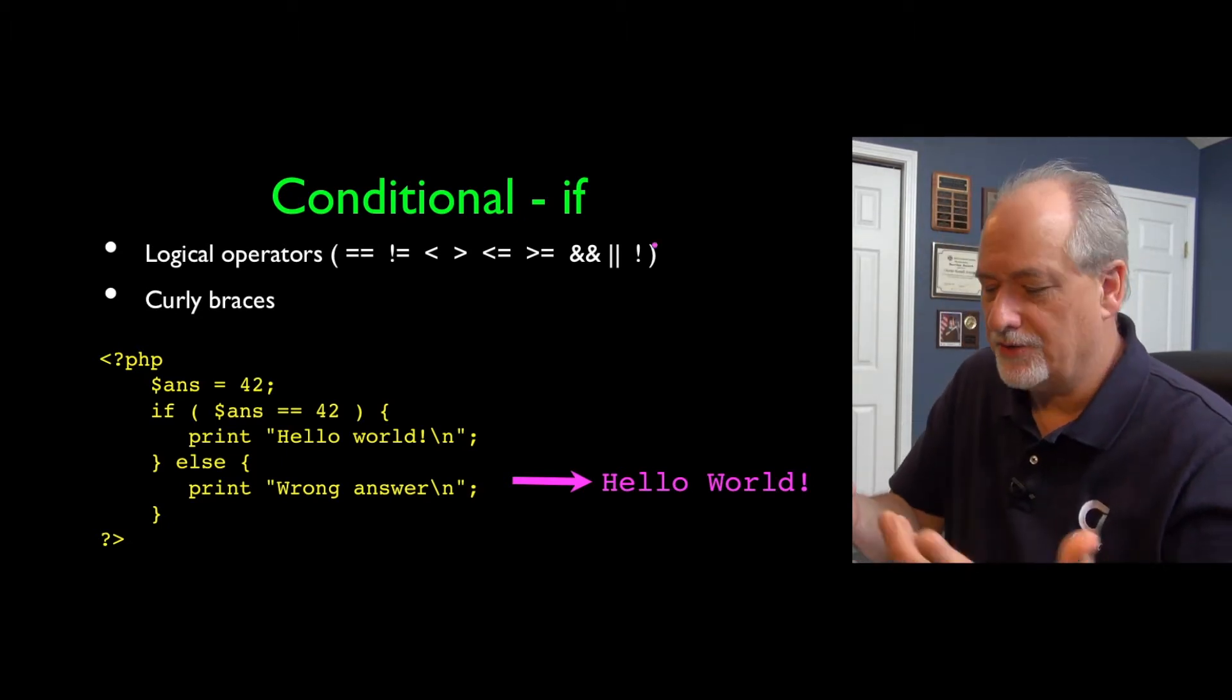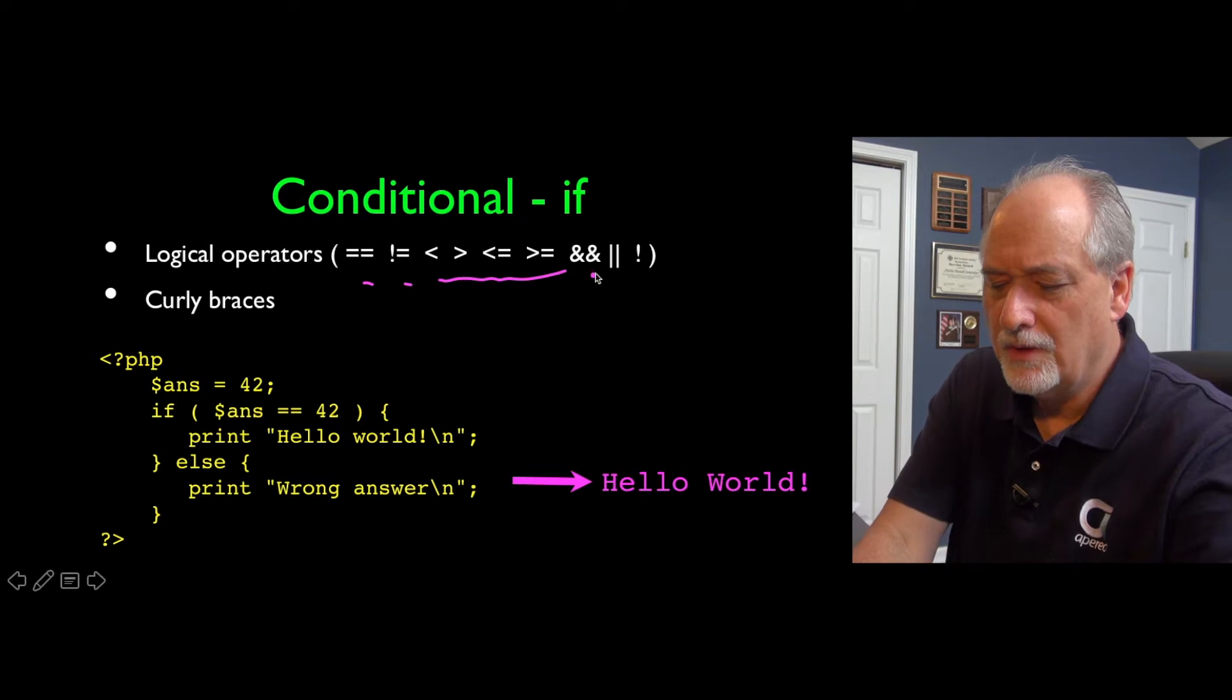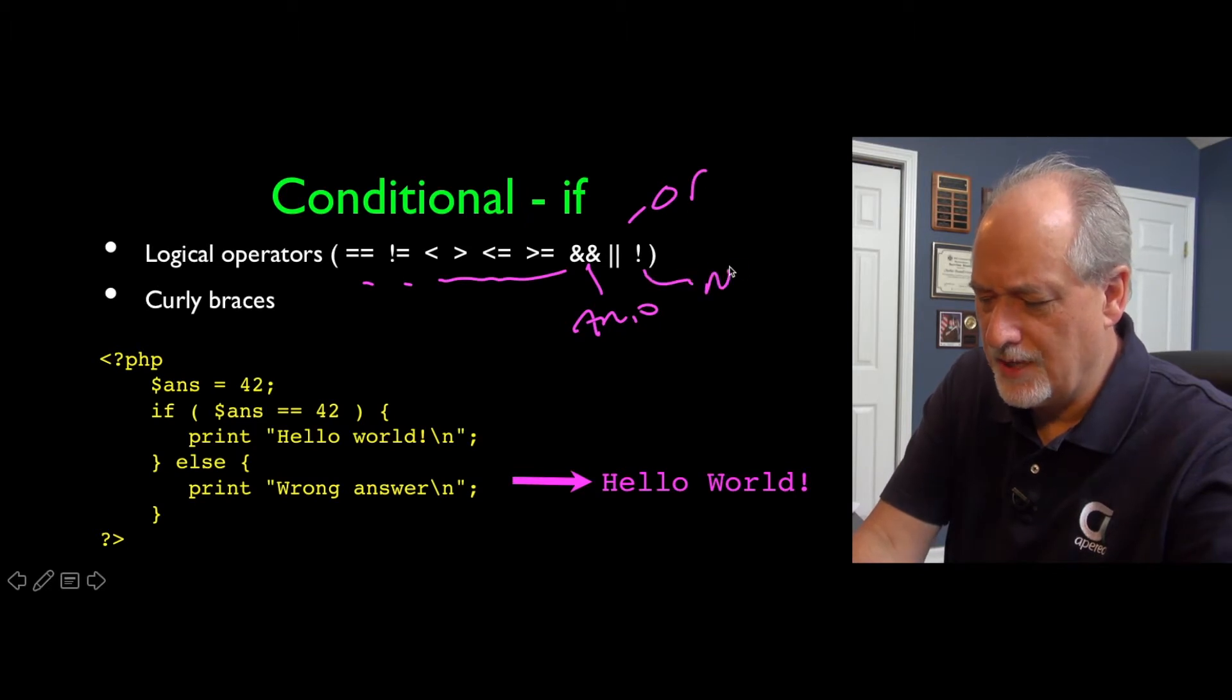The logical operators are pretty much taken straight from the C language: double equals, not equals, less than, greater than, less than or equal to. Double ampersand is and, or, and then exclamation point is not.